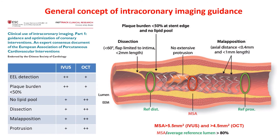General practical imaging indexes for optimal PCI are also summarized in the European Society of Cardiology consensus paper. Minimum stent area should be more than 5.5 mm² in IVUS and more than 4.5 mm² in OCT. Stent expansion index should be more than 80%. Stent edge should be located at a site where plaque burden is less than 50%. Generally, IVUS is useful for detection of the external elastic lamina and actual plaque burden, while OCT is used for detection of the thin-cap fibrous atheroma.